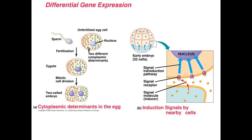Regarding early development, the egg cell contains a lot of mRNA, as mentioned before, and also other factors that will determine the specific pattern of gene expression. These determinants aren't evenly distributed, such that after cell division, the daughter cells are influenced by different determinants, which make them express their genes differently.